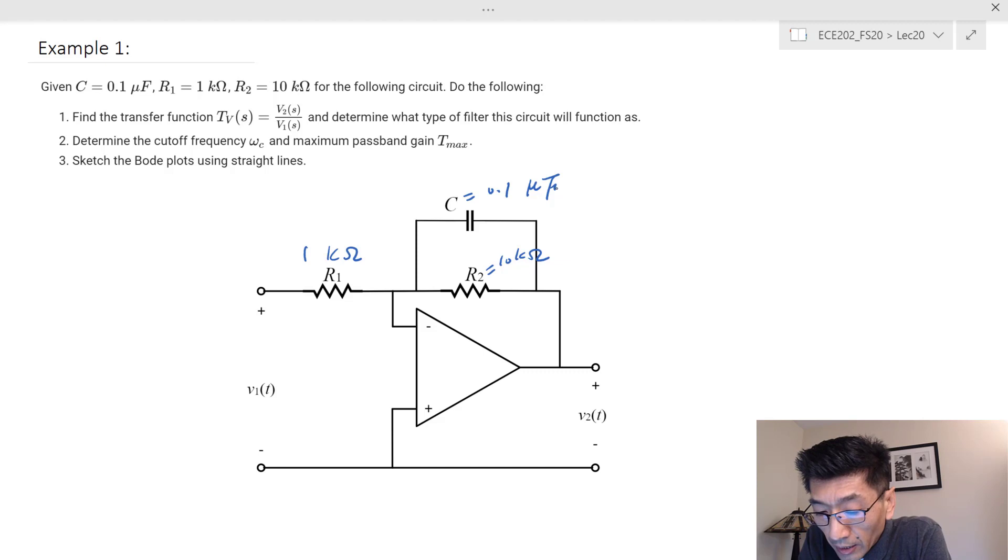The first thing we want to find is the transfer function TV(s). So I'm going to write beside this so I can see the circuit. TV(s) is going to be equal to V2(s) over V1(s), and in that case that should equal negative Z2(s) over Z1(s).